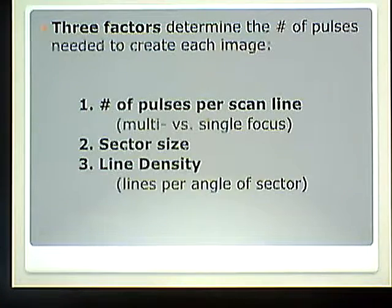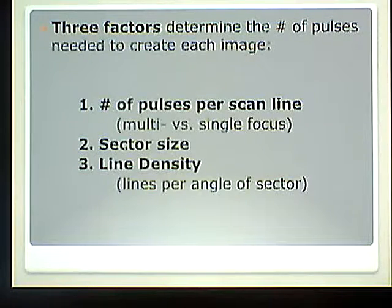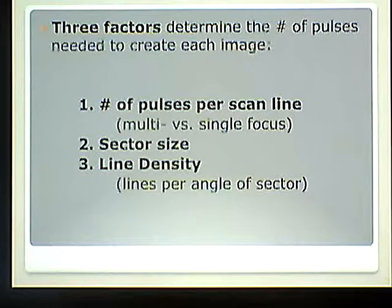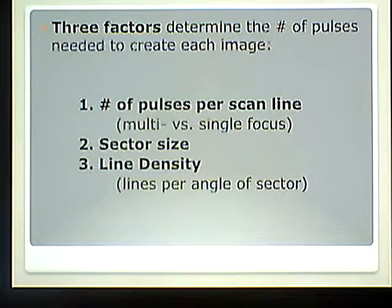There are three factors that determine the number of pulses needed to create each image. Number one is the number of pulses per scan line — remember we have multi versus single focus. Number two is the sector size. Number three is the line density, which refers to the lines per angle of sector.